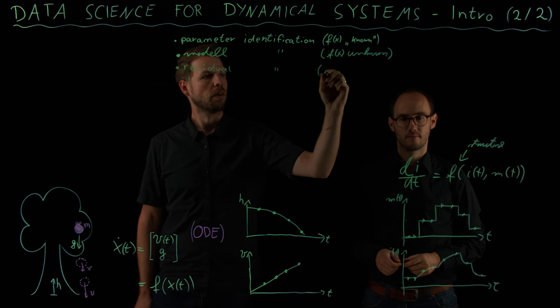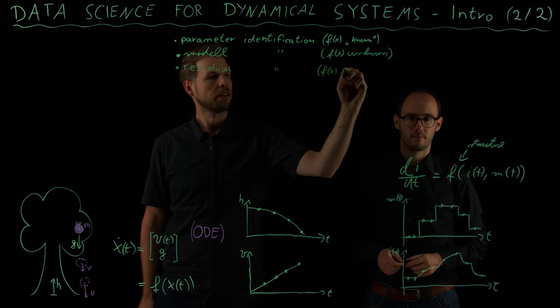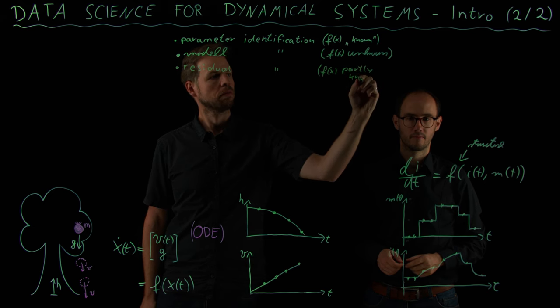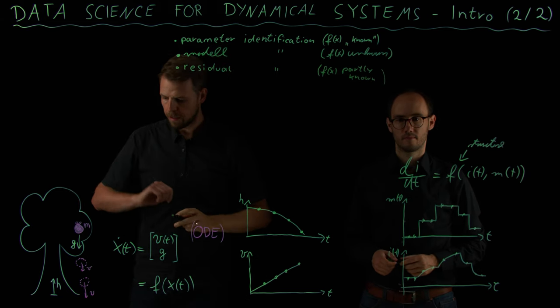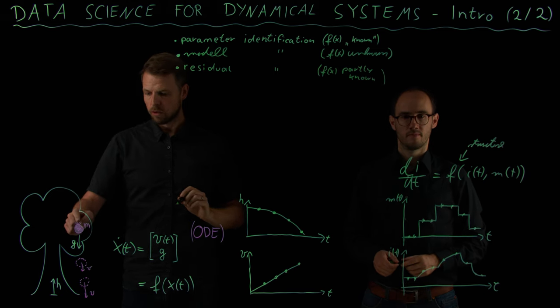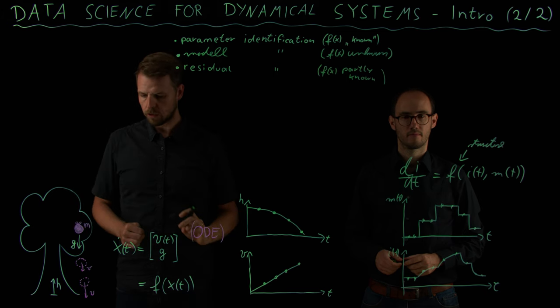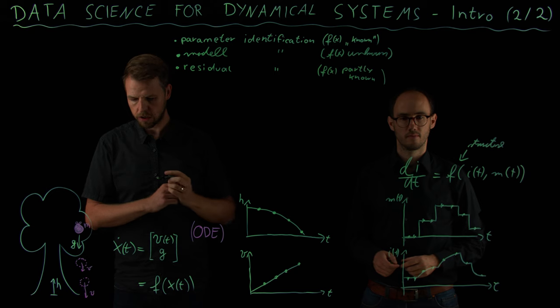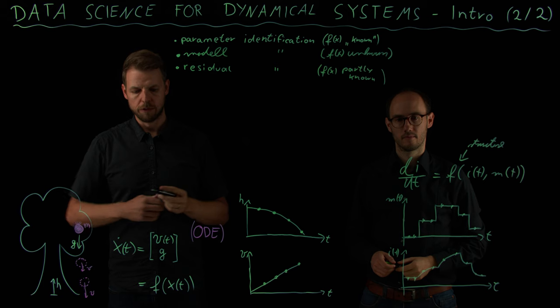Which means that our F is partly known. What do I mean by this? Let's consider the apple example once more. We have seen that using Newton's law, we were able to derive a closed form description of the right hand side. We have a term for the velocity, we have a term for the acceleration.